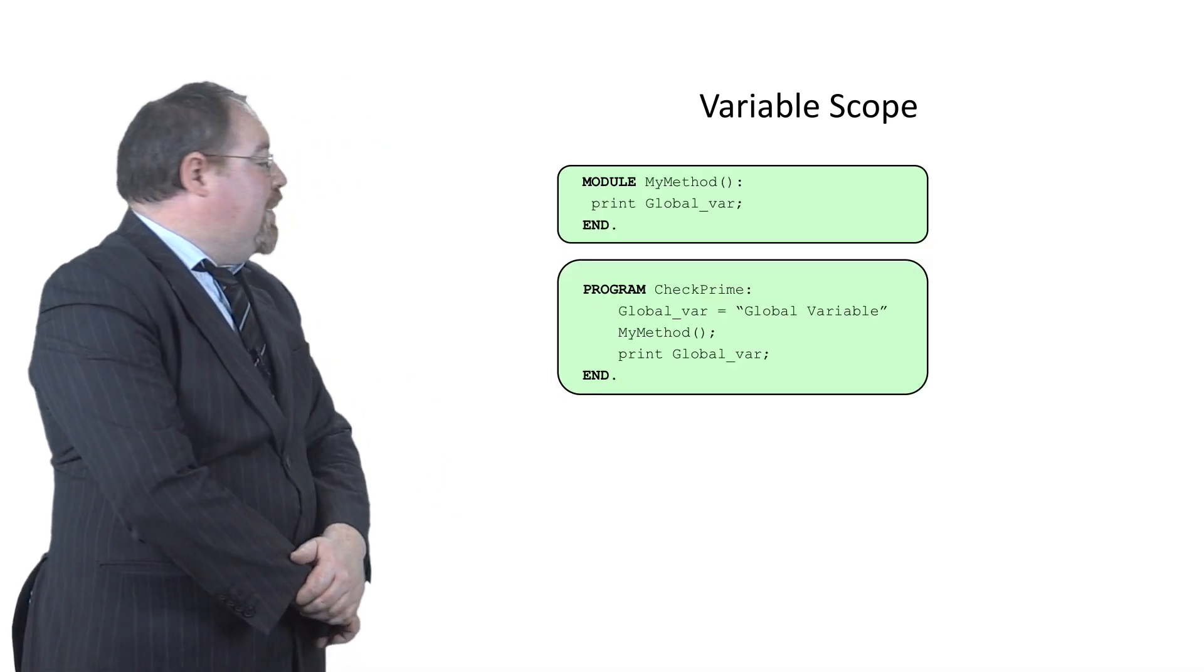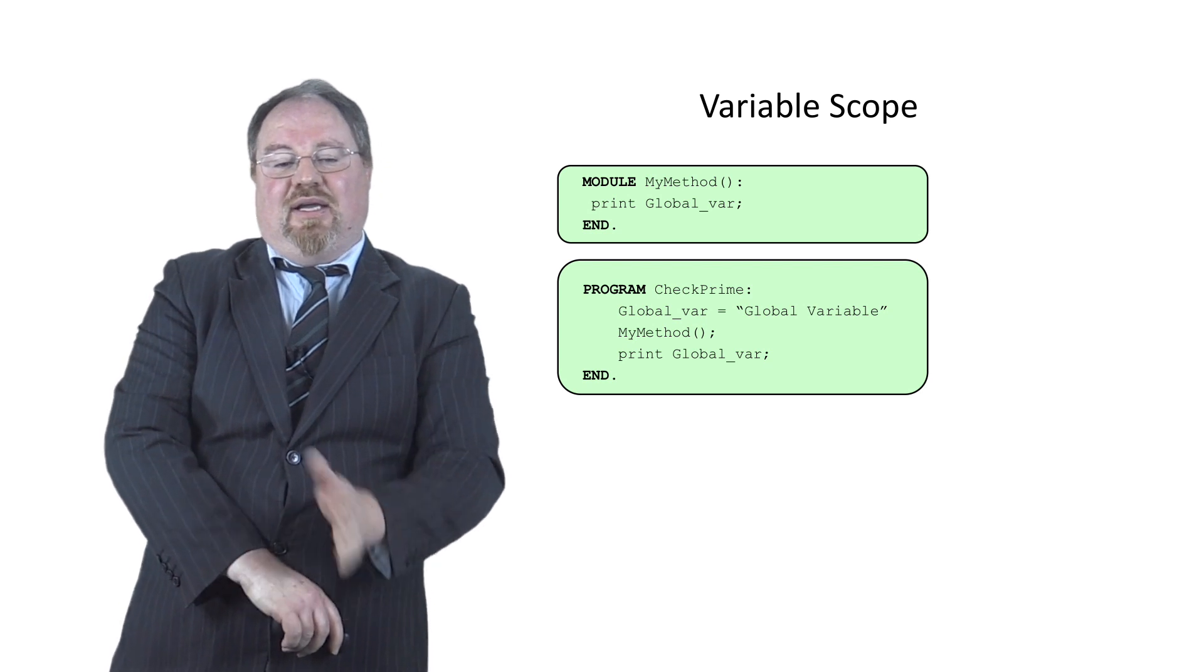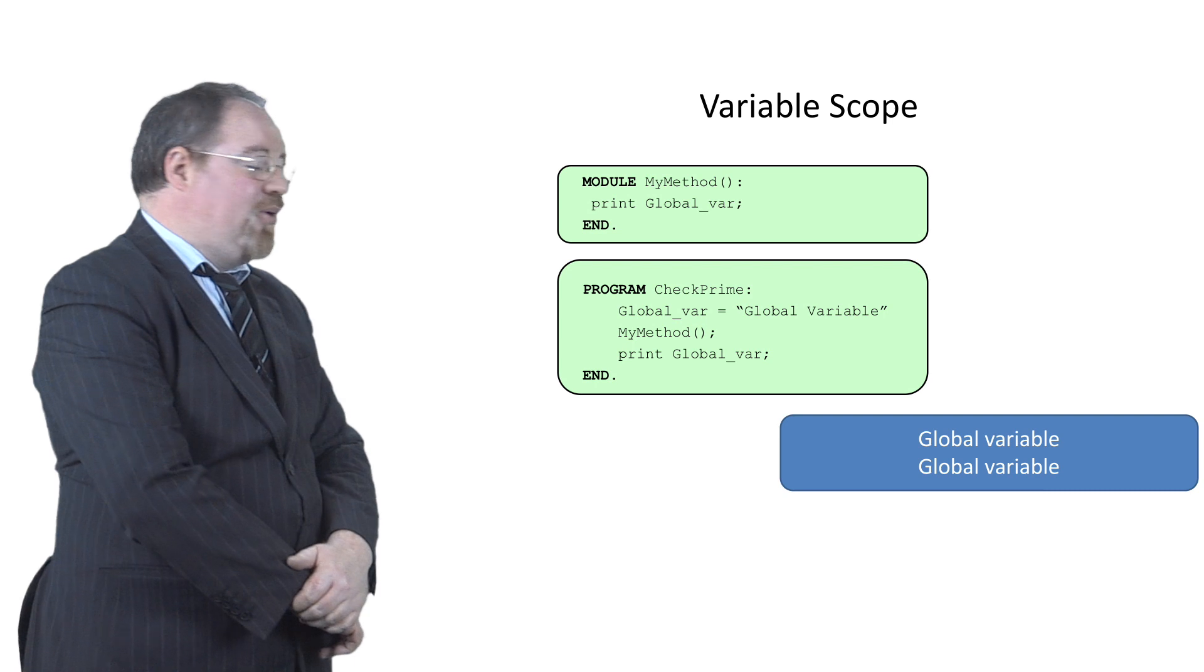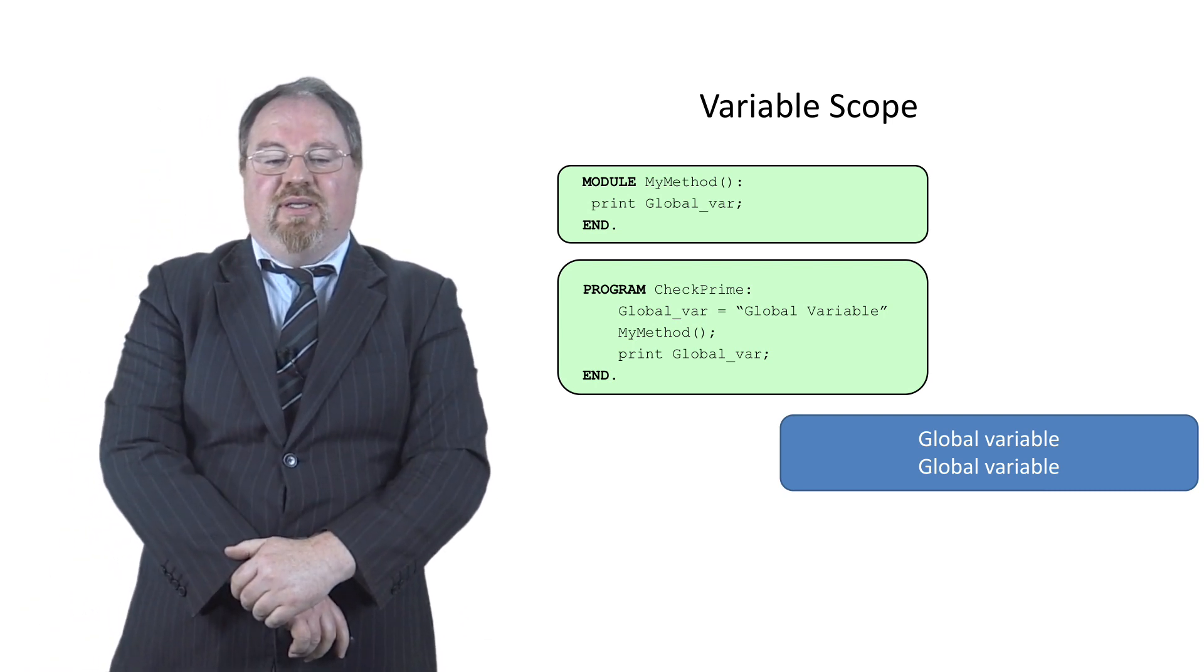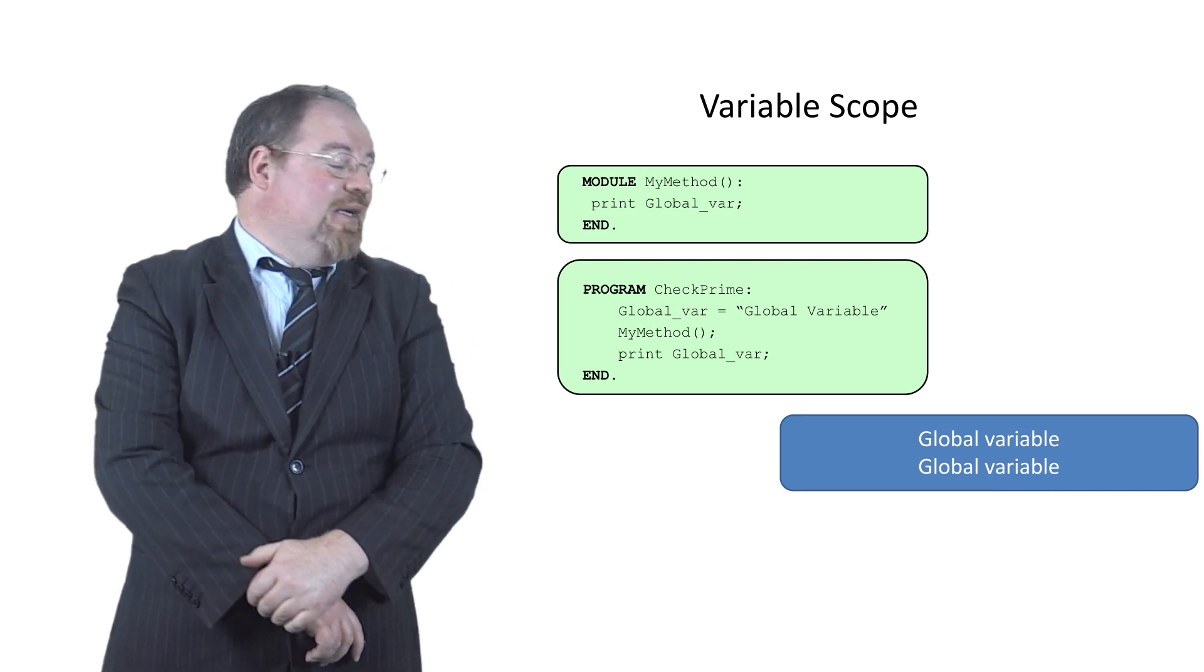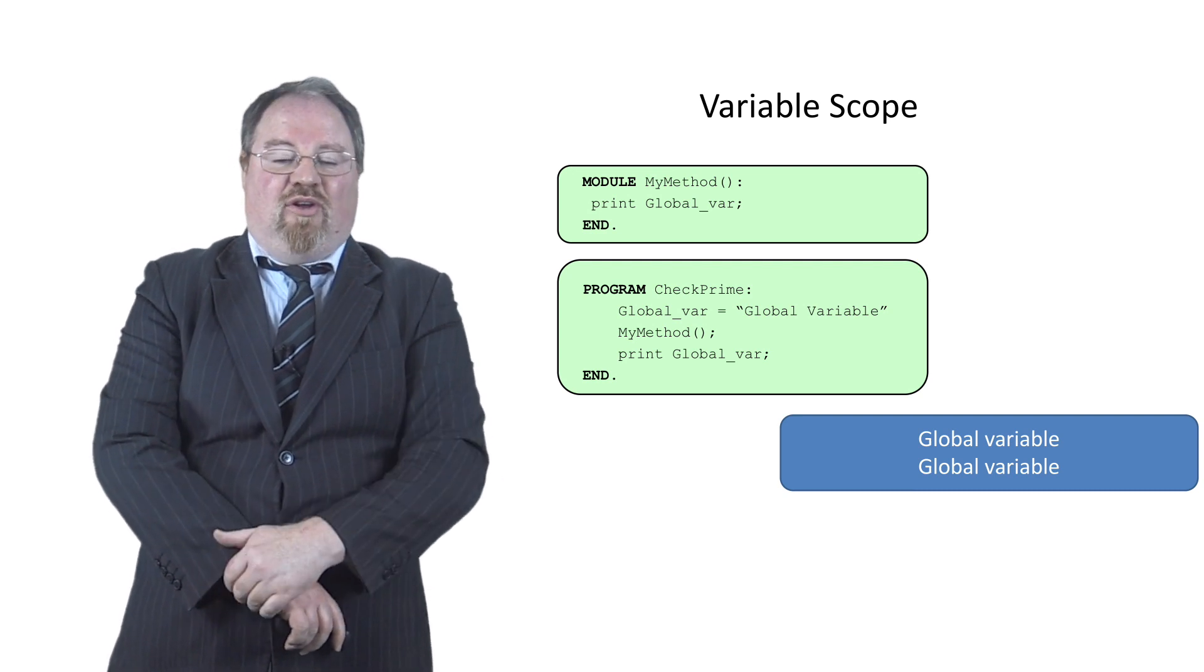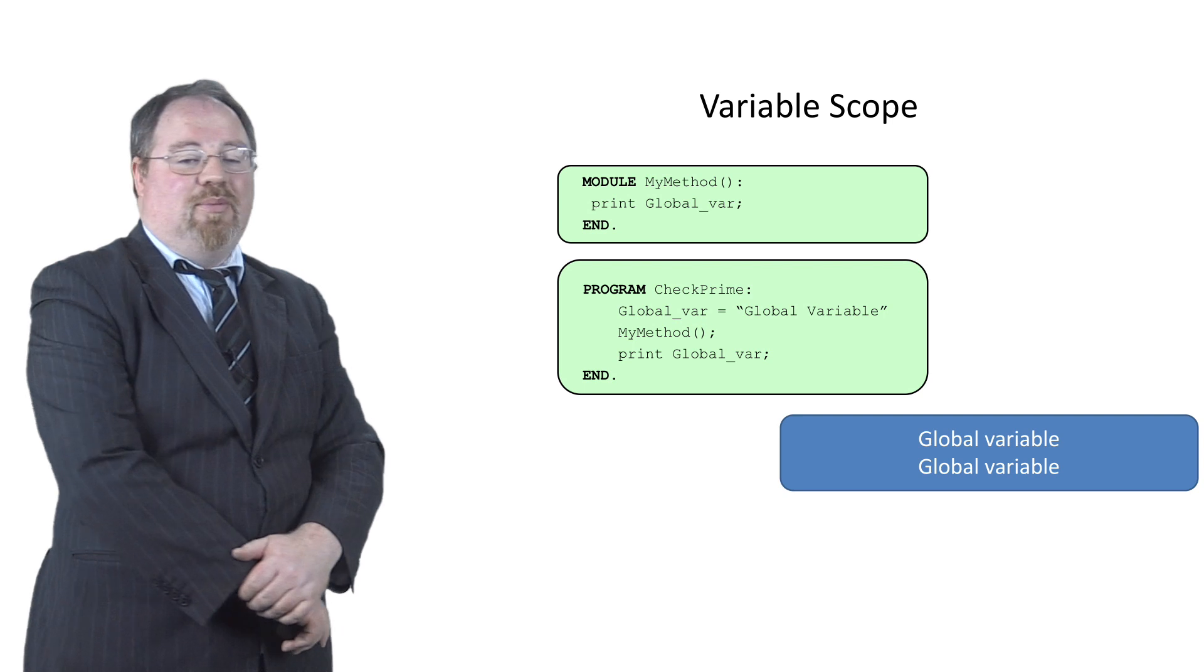So here's an example in pseudocode. If I have a module called my method, and I just say in my method, print out global variable. And then in the main program, I say global variable gets the string value global variable. And I call my method, it'll print out the phrase global variable. As it happens then, in the main, I also print out the value of global variable as well. So it'll just print out the words global variable, global variable.